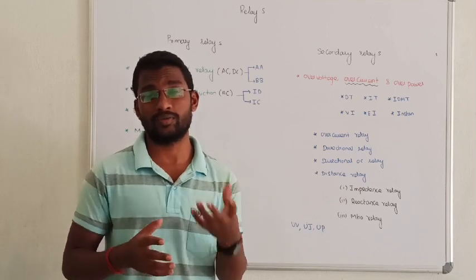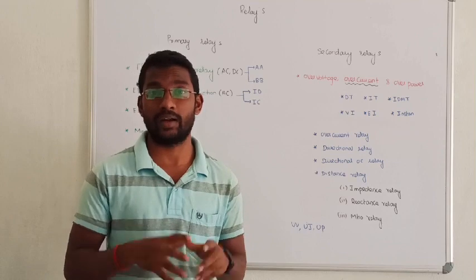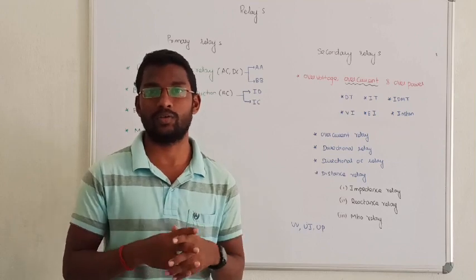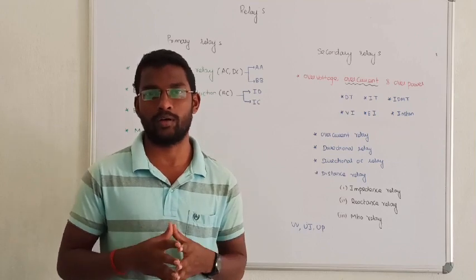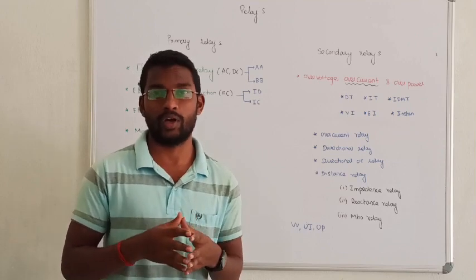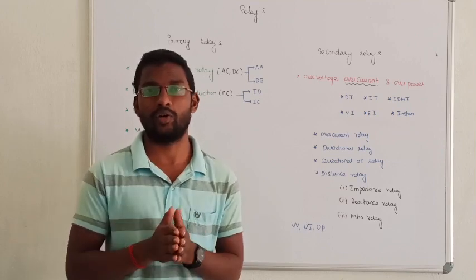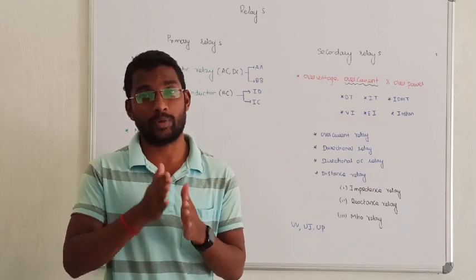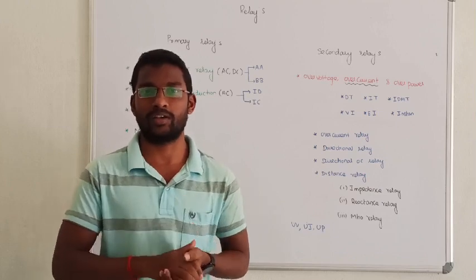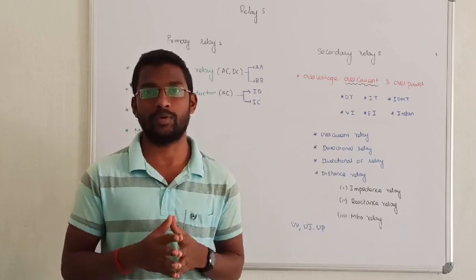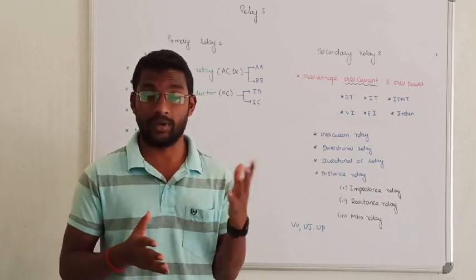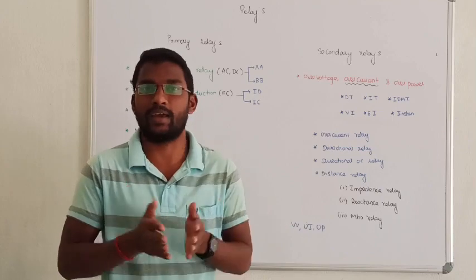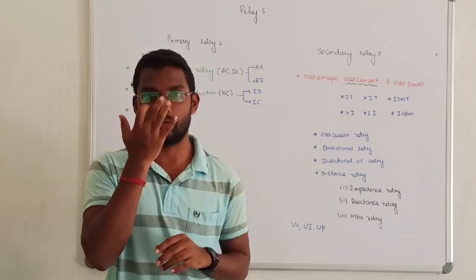For circuit breakers, what is important: recovery voltage, active recovery voltage, rate of rise, restriking voltage, making current, and breaking current - exactly.